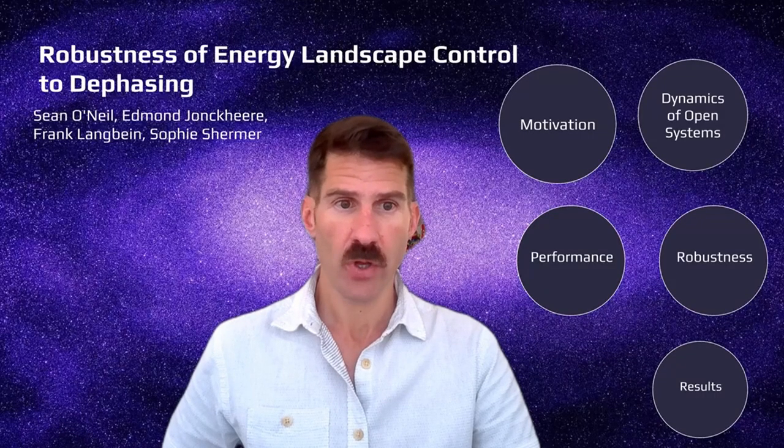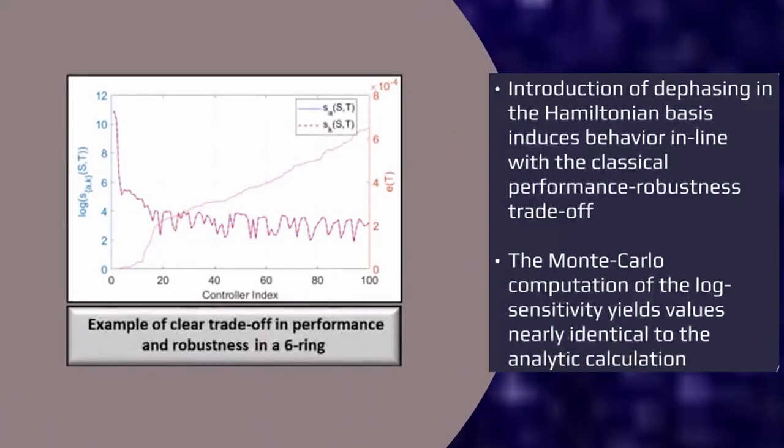In terms of our results, we note three main points. First, the introduction of dephasing results in adherence to the performance robustness trade-off expected from classical feedback control in all of the test cases. This chart is indicative of this observation, where we see the fidelity error with the red line and the log sensitivity, the blue and the black dotted lines, trending in opposite directions.